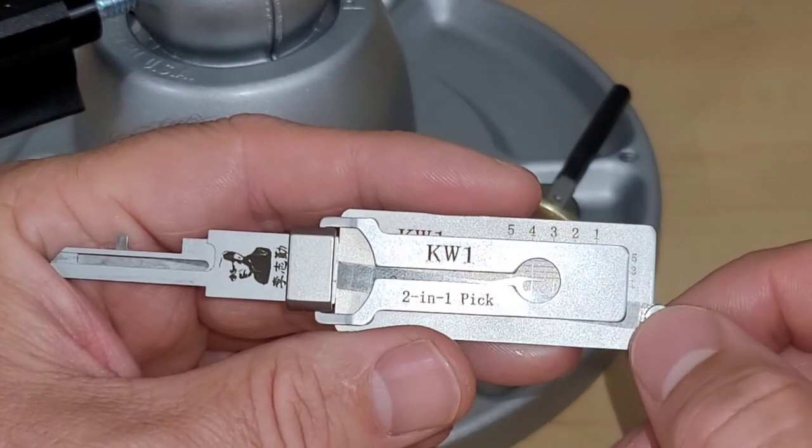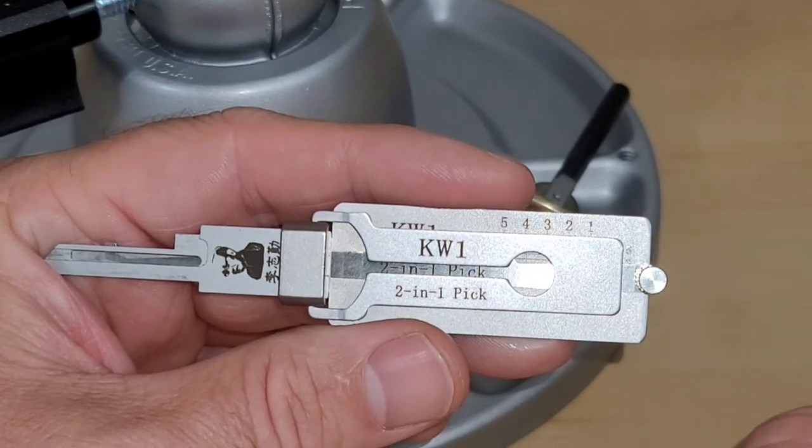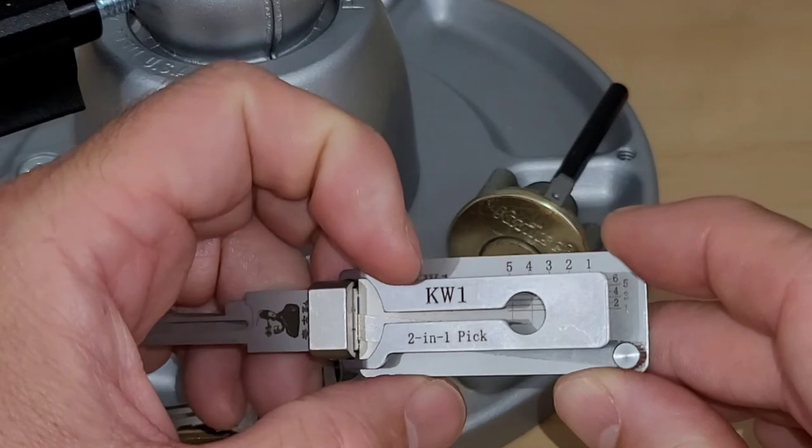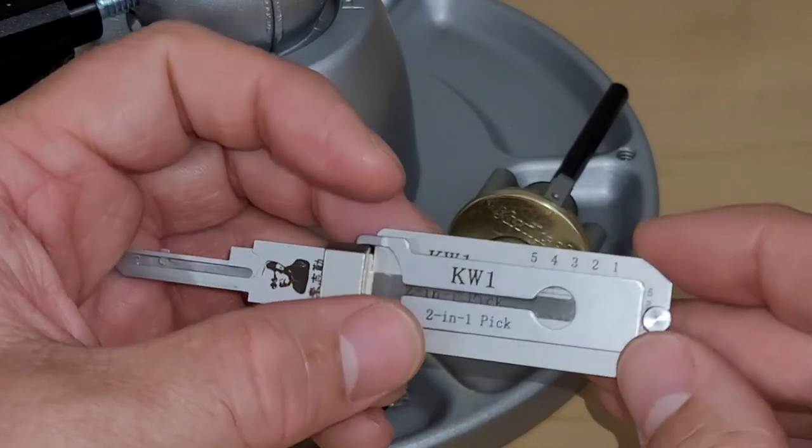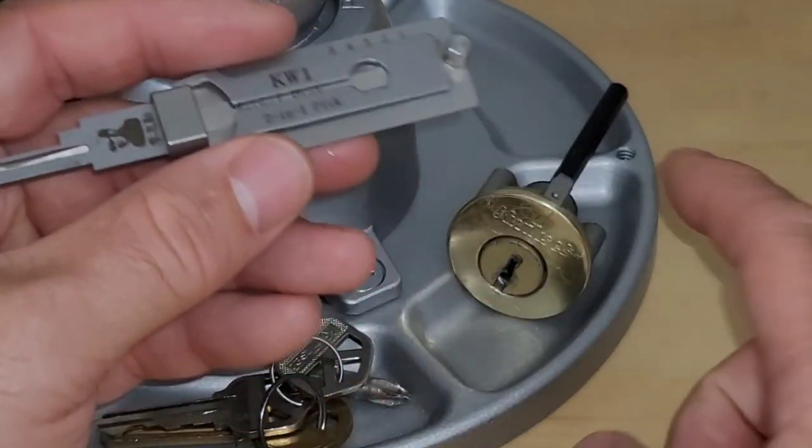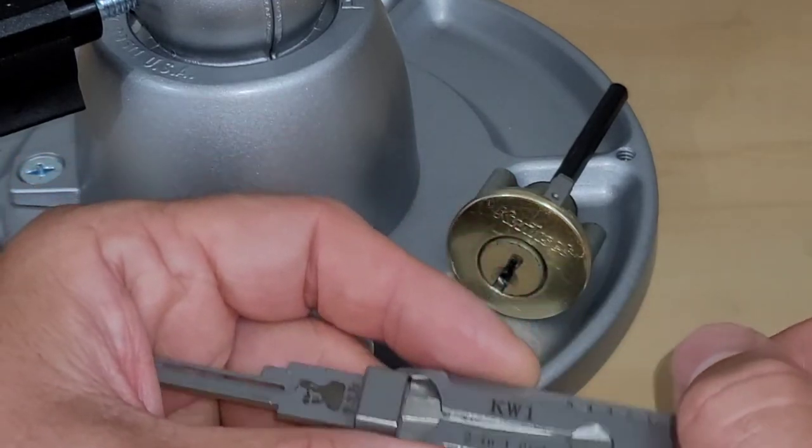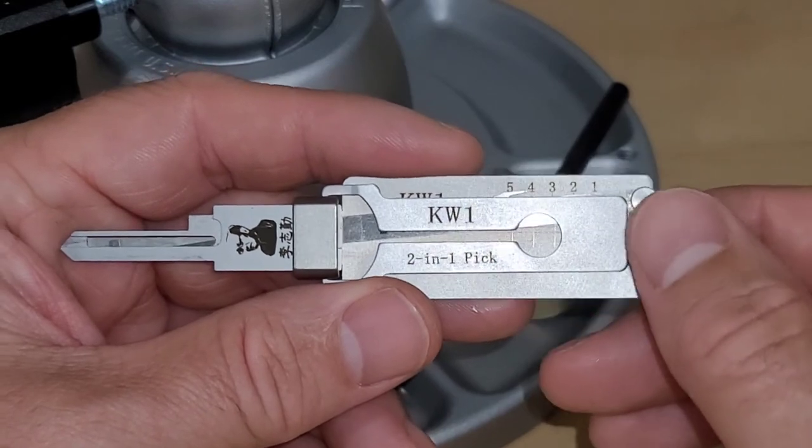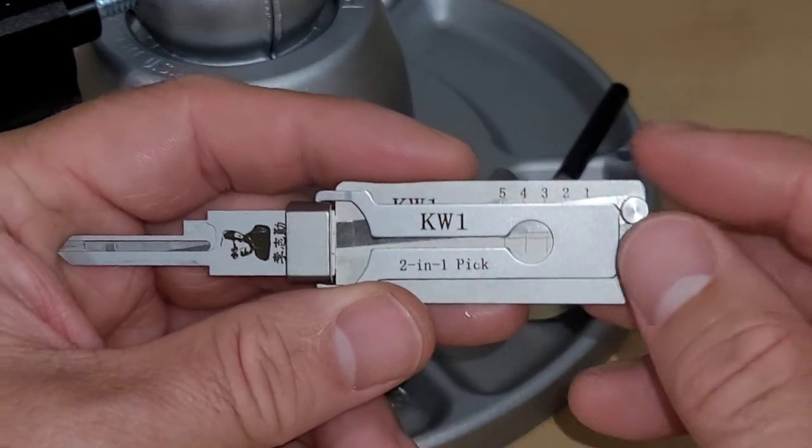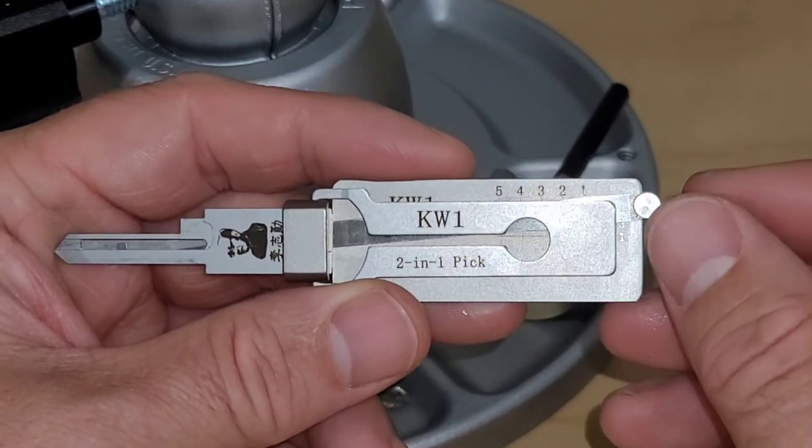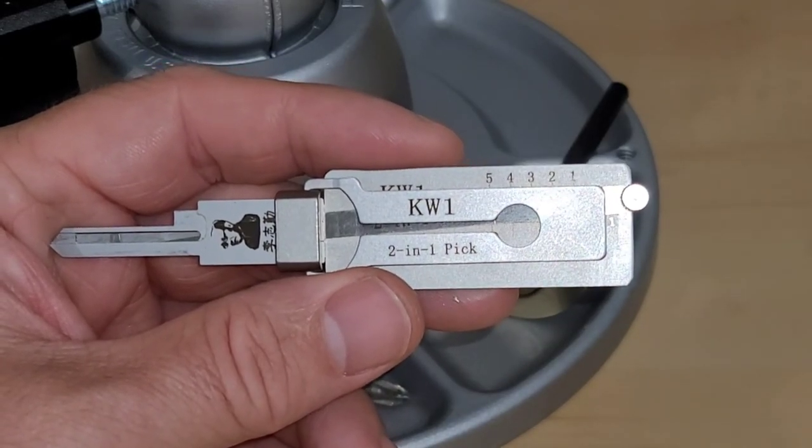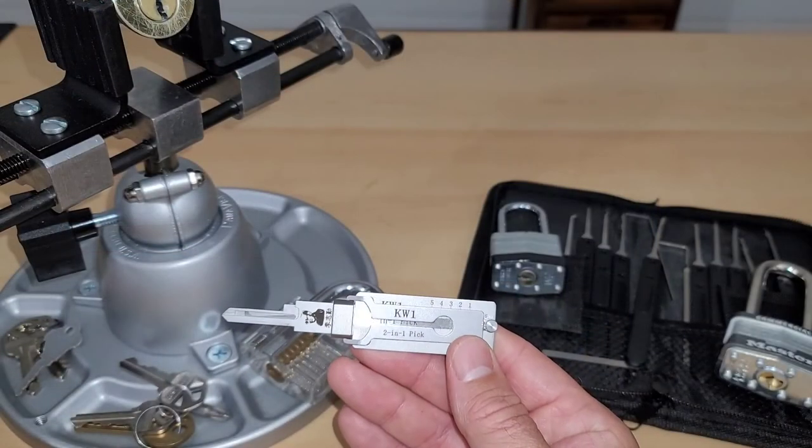That was my full review where I took a look at this KW1 Lishi tool. I am going to be interested in trying some of the other Lishi tools just to see, you know, how they work. I'm also going to try to find some other Kwikset locks to see if I can pick it open at least as quick as this one. If this is something that interests you, I will leave a link down in the description. This is Jeff with Jeff Reviews for You. As always, thanks for stopping by, and I hope you have a great day.